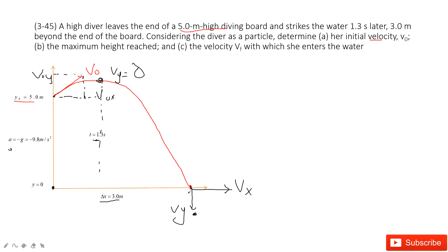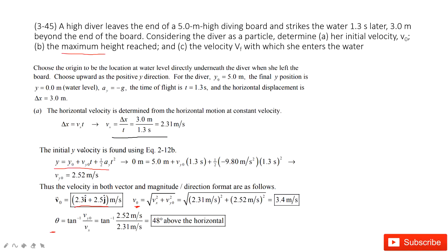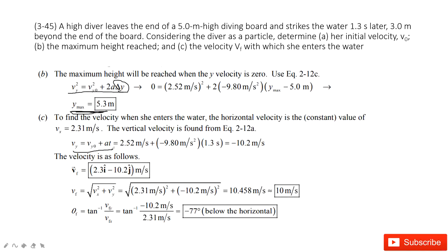We can find vy because we know the initial velocity, initial position, acceleration, final position, and we know time t. Using the kinematic equation, vy equals v0y plus acceleration times t. So we get the y component, and since the x component is constant, we get the final velocity in vector format. Then we can get its magnitude and angle theta. Thank you.